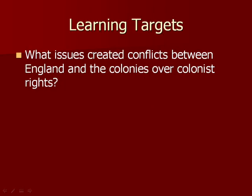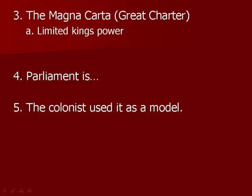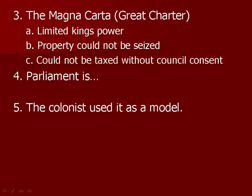In the second part, we're looking at what issues created conflicts between England and the colonies over colonist rights. The colonists living in the colonies shared the same rights as people living in England, rights the English had been developing for centuries. The Magna Carta was the first document that gave people some say and limited the king's power — property could not be seized without reason, and taxes could not be passed without council consent. Parliament is England's lawmaking body.